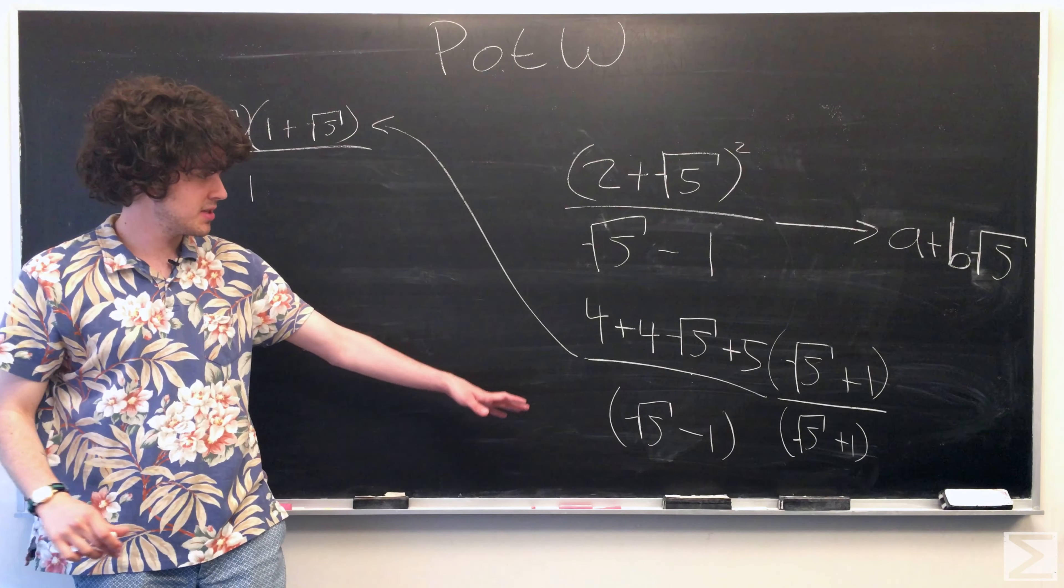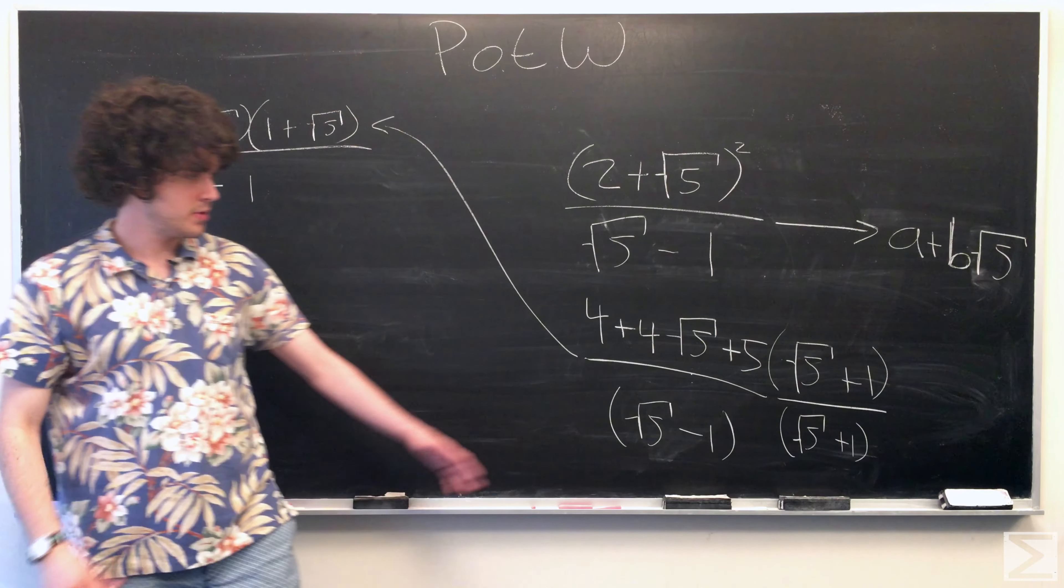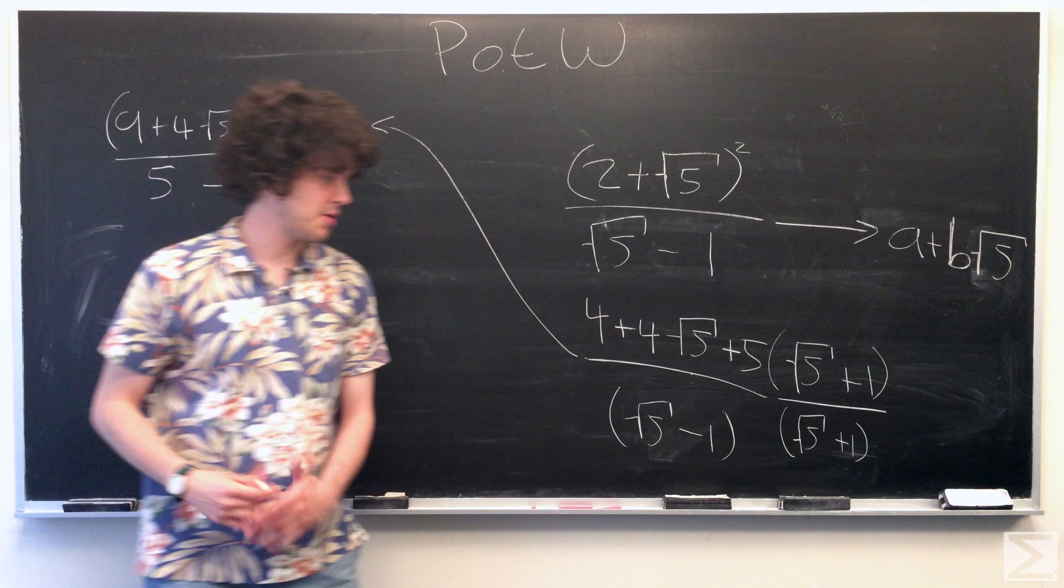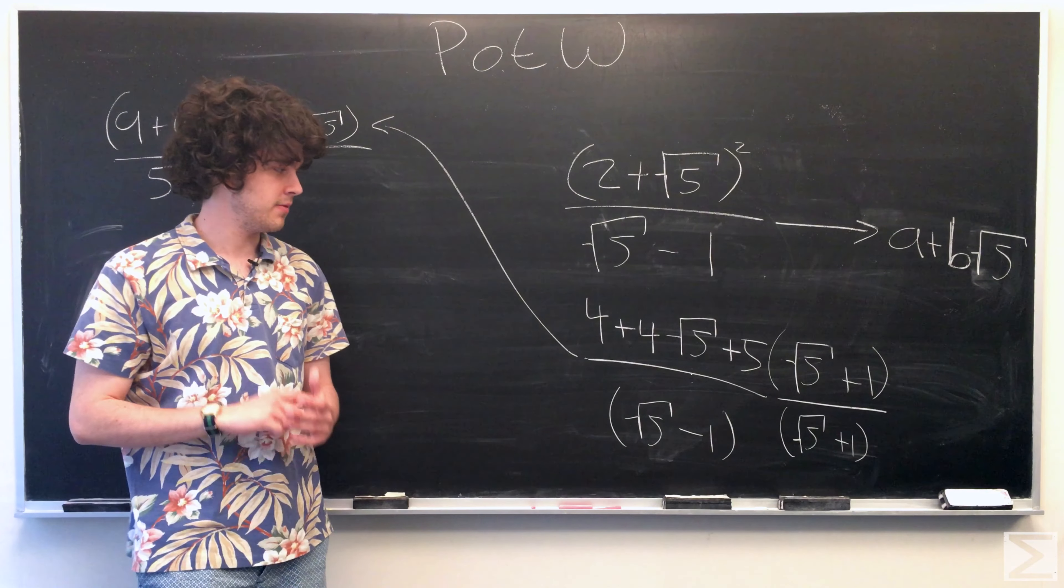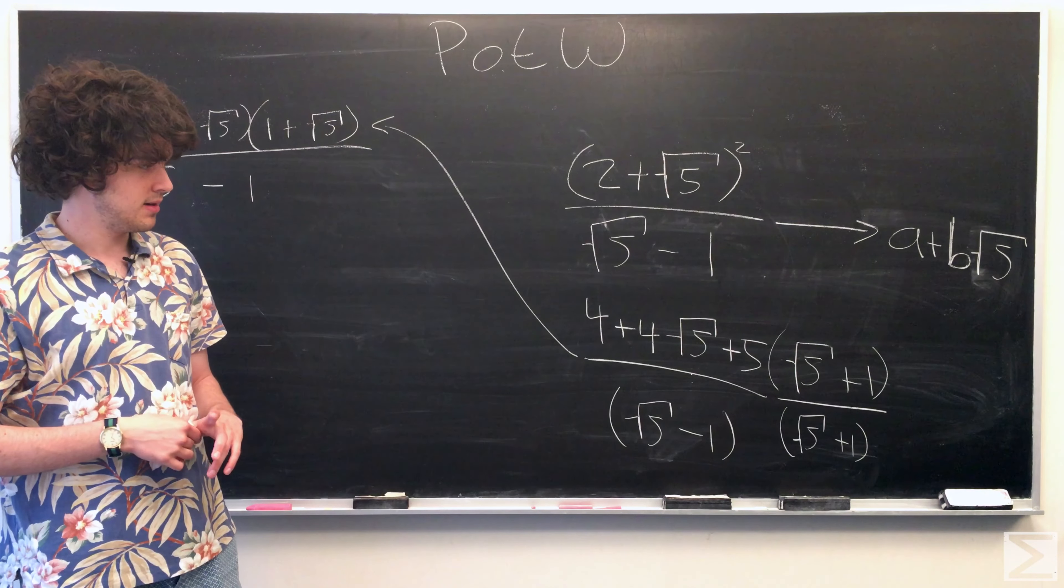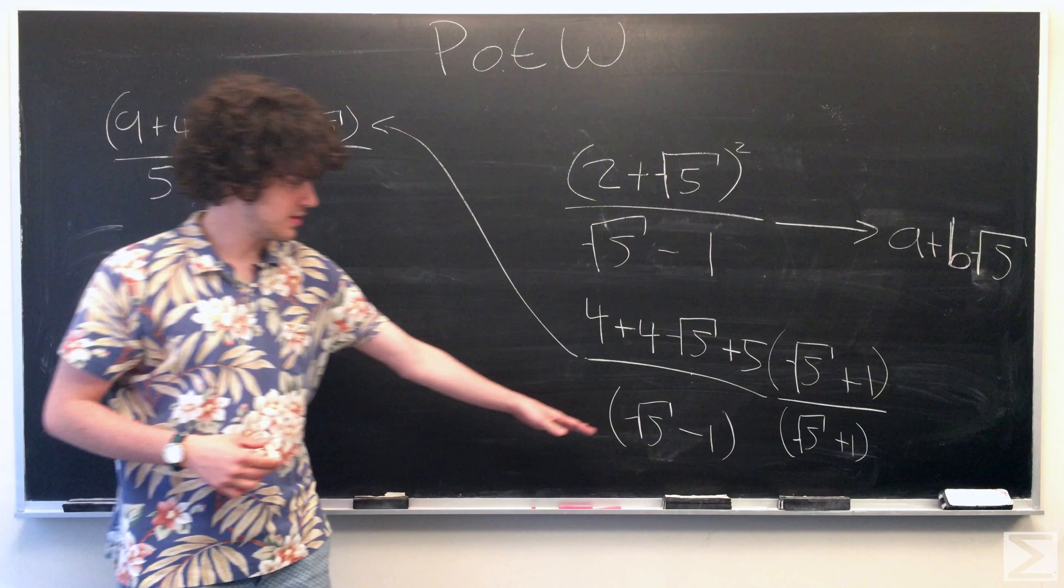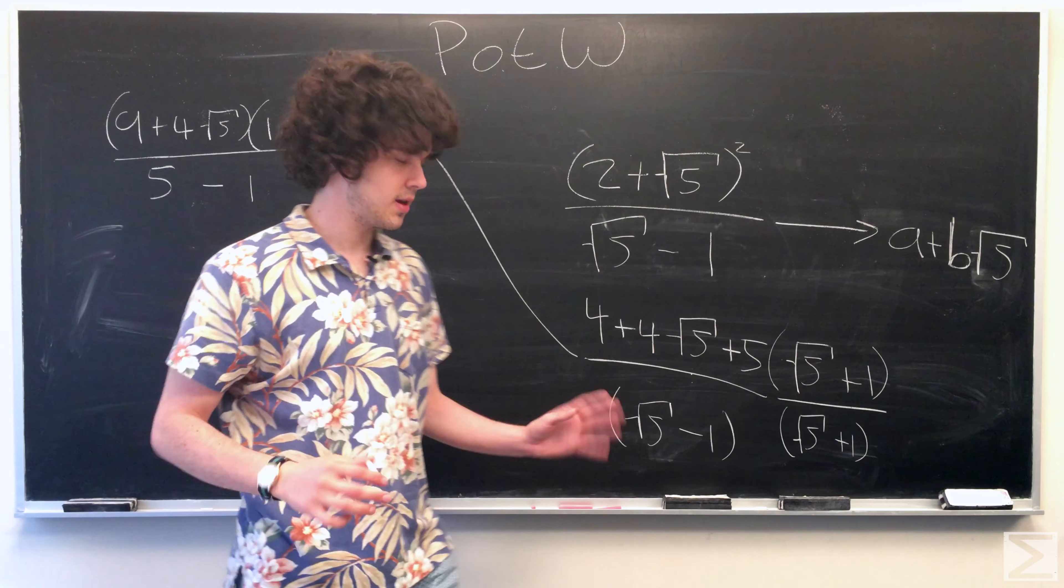So here we can see, we just multiply our fraction by 1. So it doesn't change the value of it at all. And foiling this out, the cross terms cancel out, which is good.